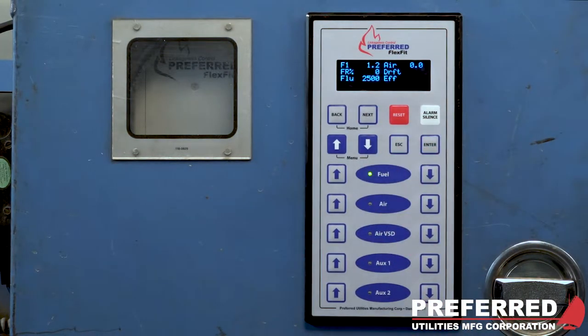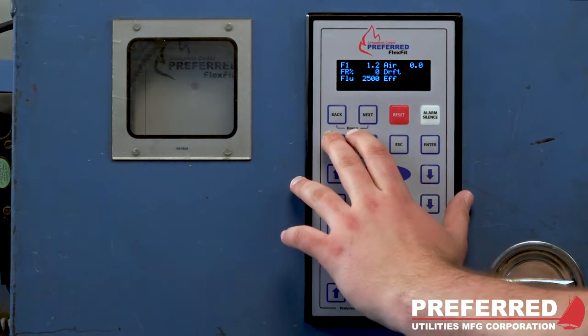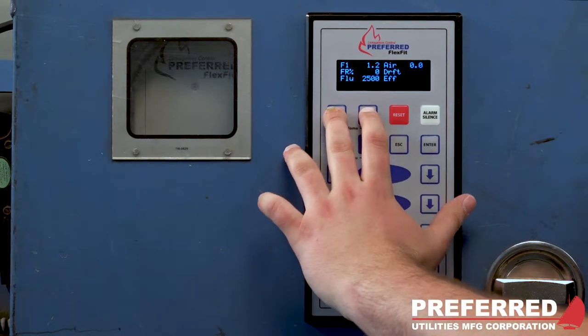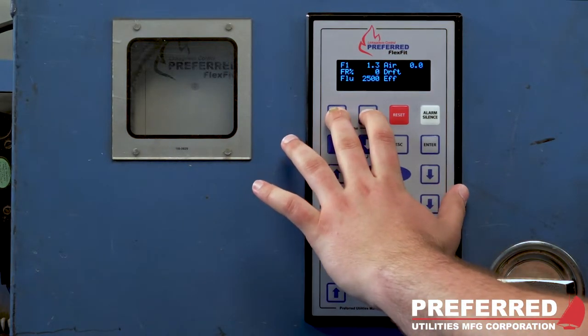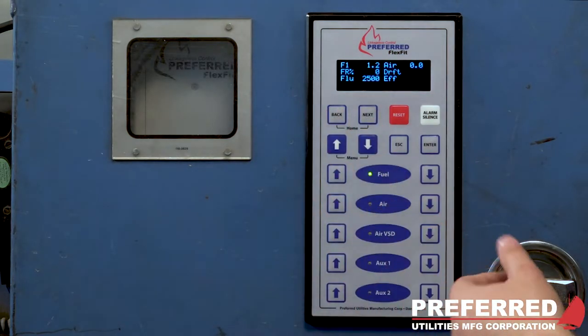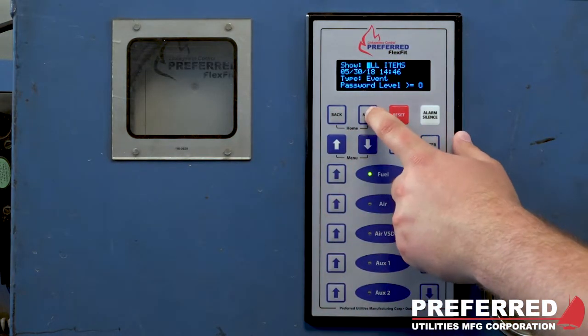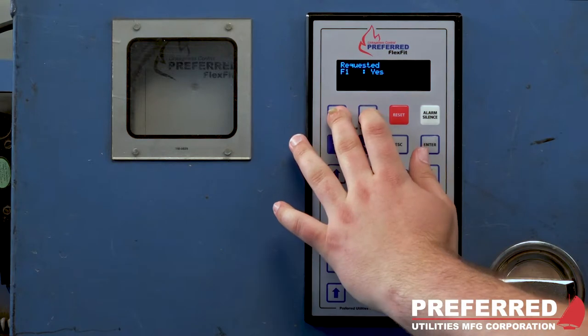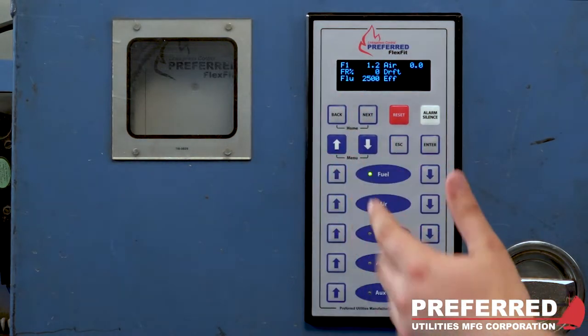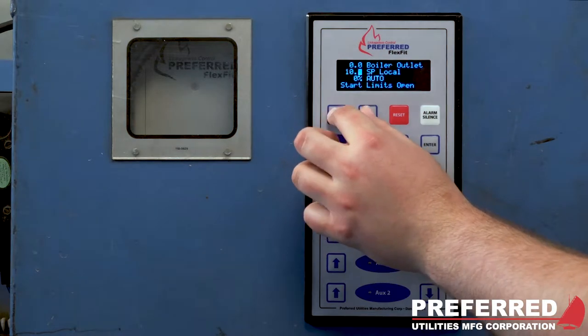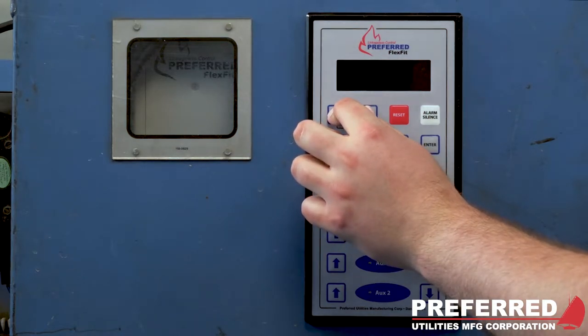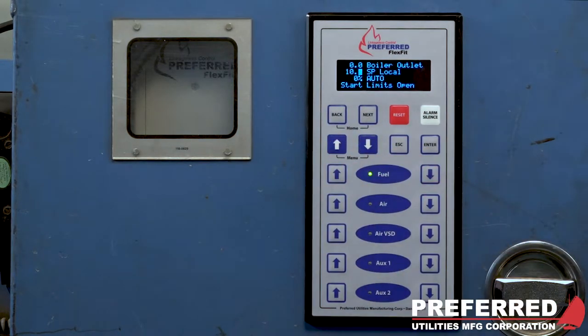If you were to change your home screen you would press the home button, which is back and next together, and hold it until the screen flashes. And now that is your home screen. So you could leave, press home, and it will go back to what you selected. We can put it back on what we had before and that's our home screen.